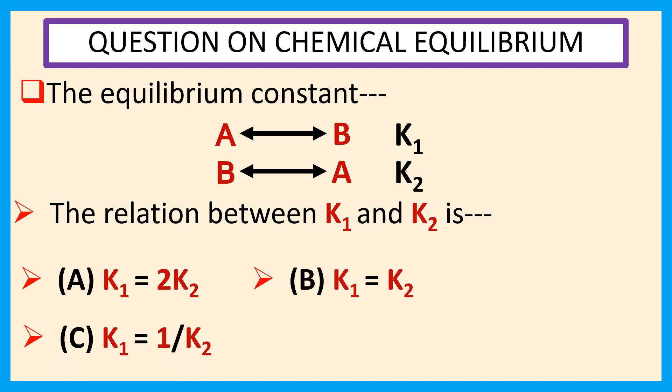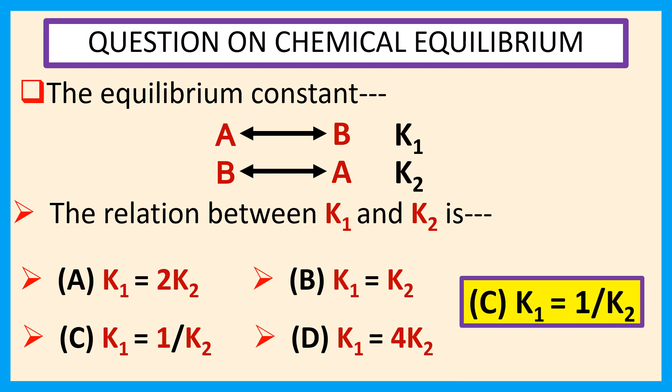C. K1 equals 1 by K2. D. K1 equals 4K2. Answer is C: K1 equals 1 by K2.